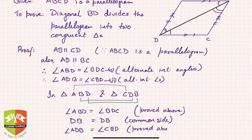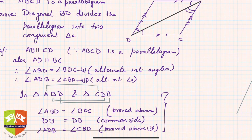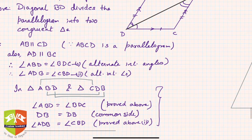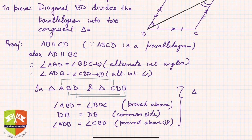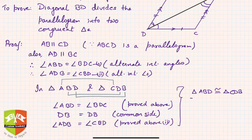Looking at the equations we just proved, therefore triangle ABD is congruent to triangle CDB. There is a chance you might make an error here, so please be very careful in terms of what correspondence you are making.